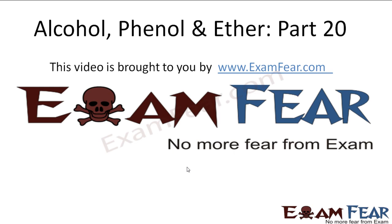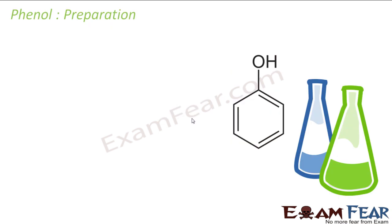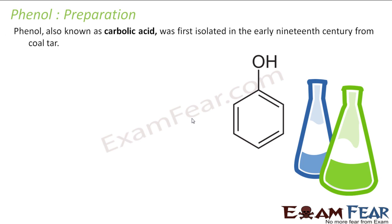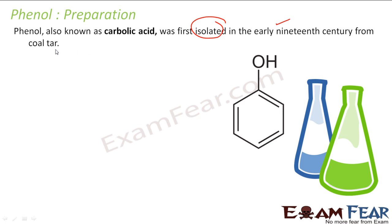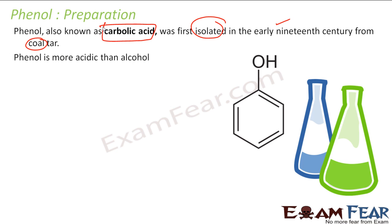Hello friends, this video on Alcohol Phenol Ether Part 20 is brought to you by examphia.com. We'll talk about phenols — we have discussed what phenol is, and now we'll discuss the preparation of phenol. Phenols are also called carbolic acid, because it was first isolated from coal tar in the early 19th century. It is also more acidic than alcohol and more acidic than water.